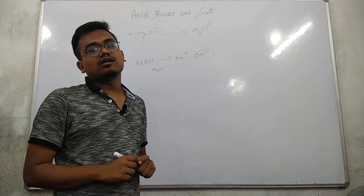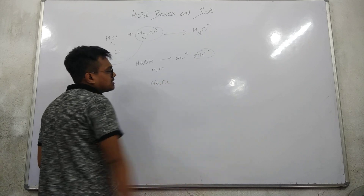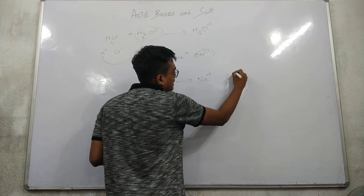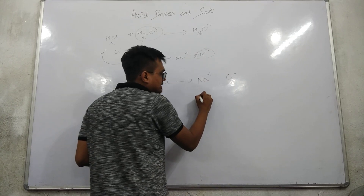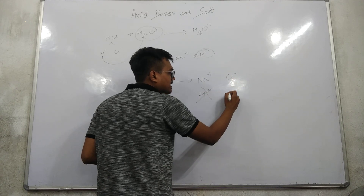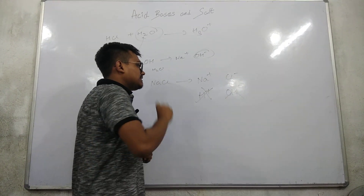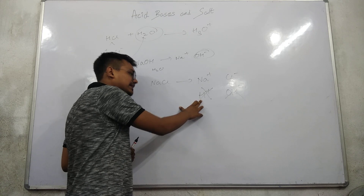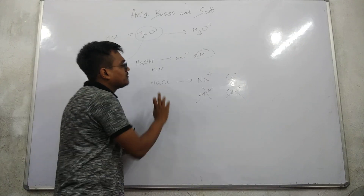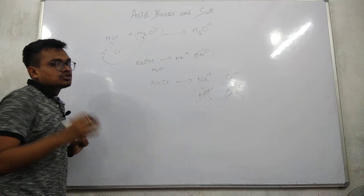Next, we talk about salt. Salt can be defined in two ways. First, salt is a compound which, when dissociated, gives a positive ion other than H+ and a negative ion other than OH-. Another way to define salt is that it is formed by the complete or partial replacement of the hydrogen ion of an acid by a metallic ion.